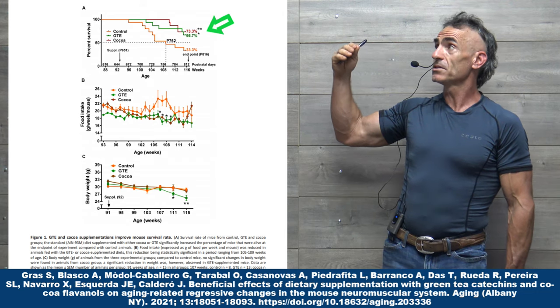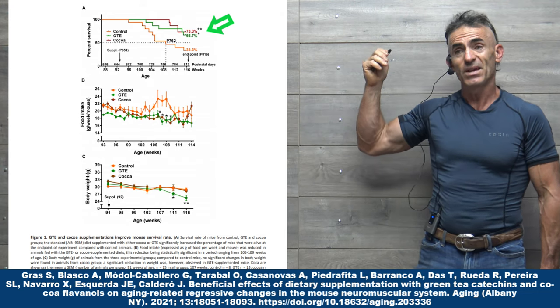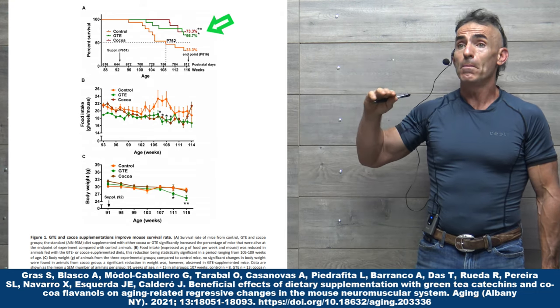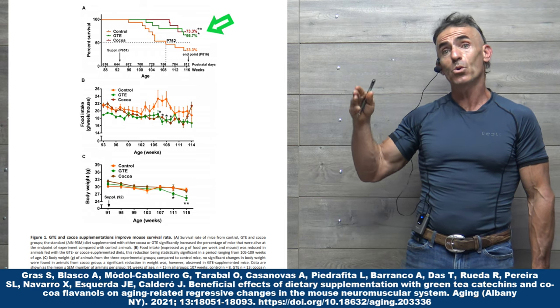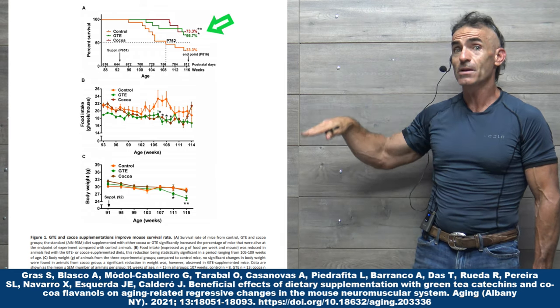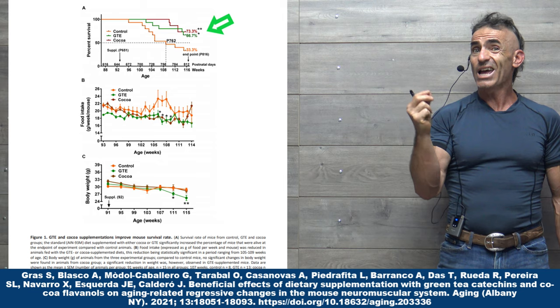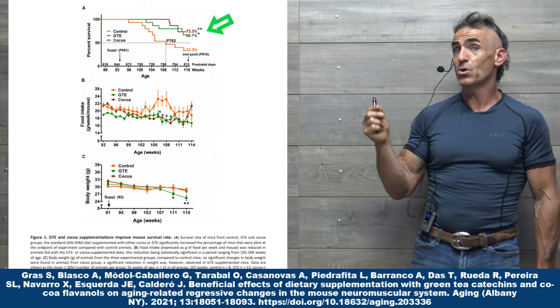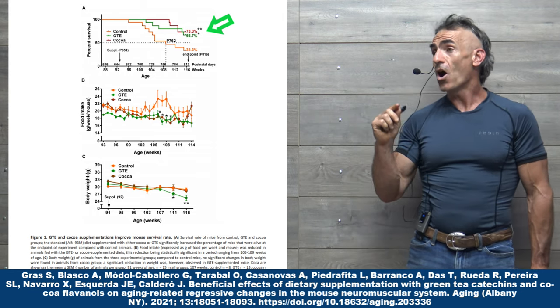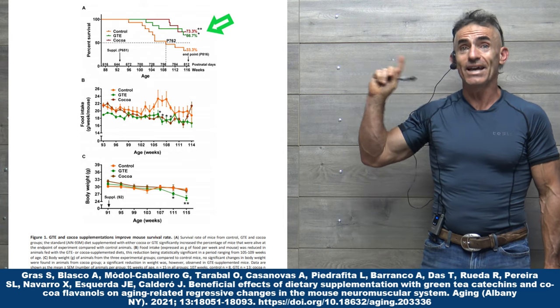One group with cocoa flavanols, look at the survival rate of that group, and of course the control without any green tea catechins or cocoa flavanols. You can see the comparison right there. The life extension properties of the green tea catechins and the cocoa flavanols already is astounding.